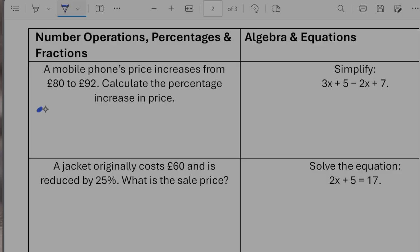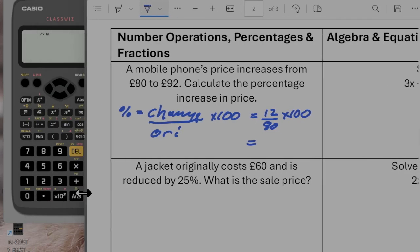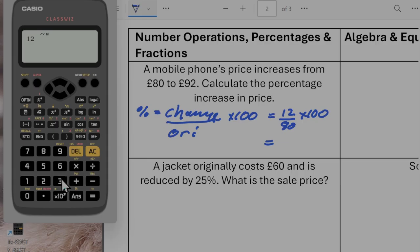So the percentage increase is going to be equal to the change divided by the original times by 100. So that's going to be equal to, change is going to be 12 divided by 80 times by 100, which will give us, let's go calculator. So 12 divided by 100 divided by 80 times by 100. So that's going to give us a 15% change.